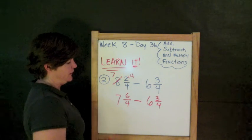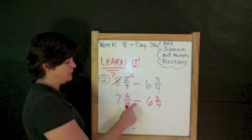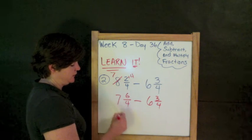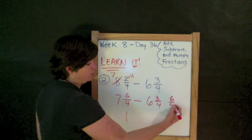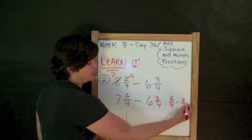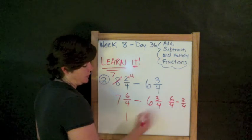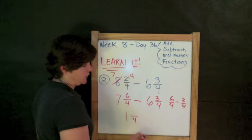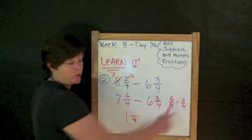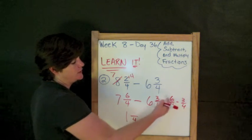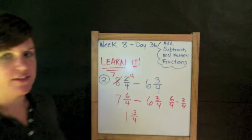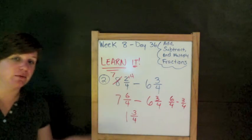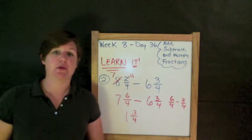All right. Now, 7 minus 6 is 1. And then 6/4 minus 3/4. Keep our denominator the same, which is 4. 4, 4, 4. They've got to match. 6 minus 3 is 3. So, 1 and 3/4 is your answer. You might want to go back and replay this one to see what I did there with the regrouping.